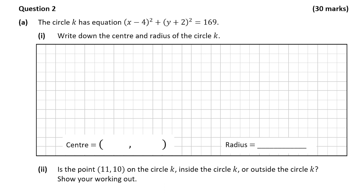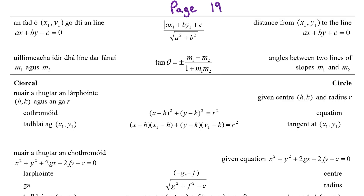The first thing I'm going to do is open up page 19 in my formula and tables book. We can see that the equation of a circle given as (x - h)² + (y - k)² = r² has centre (h, k) and radius r. We have to work out what numbers are in place of h, k and r in the equation given in part a.